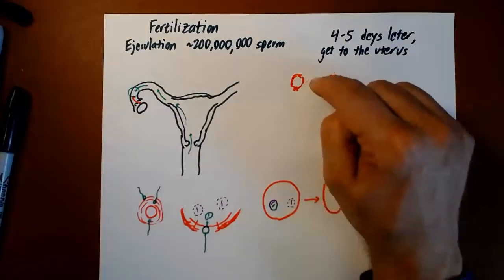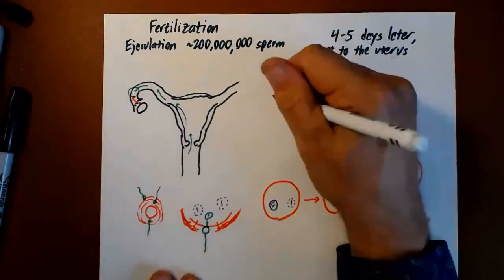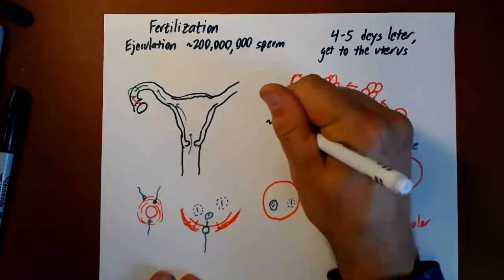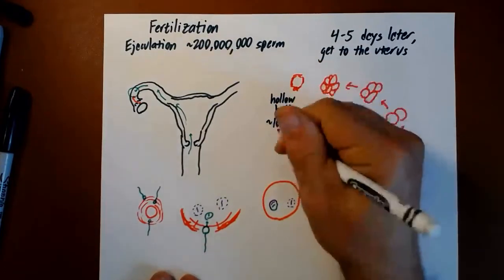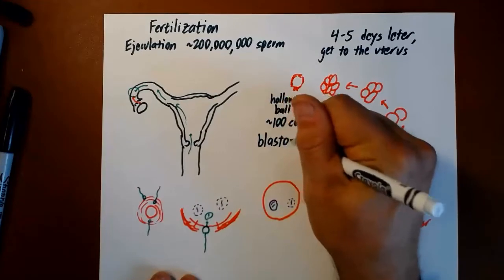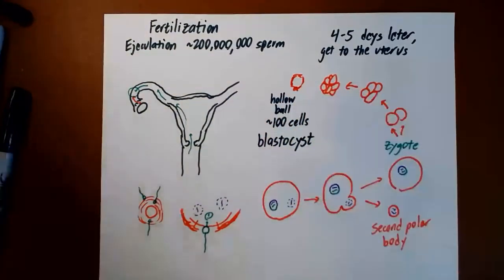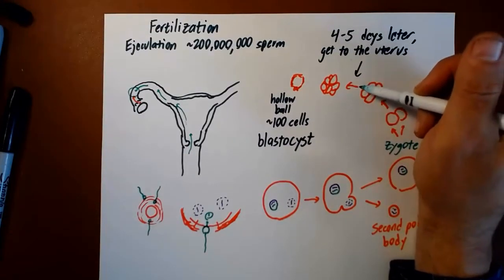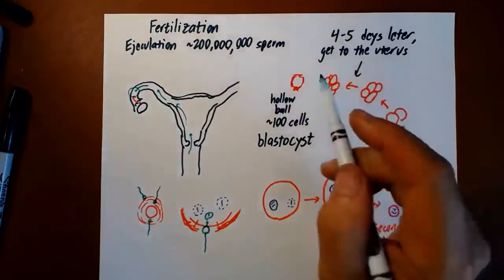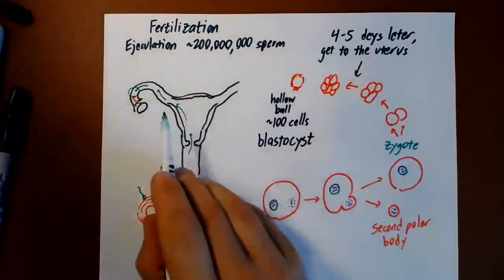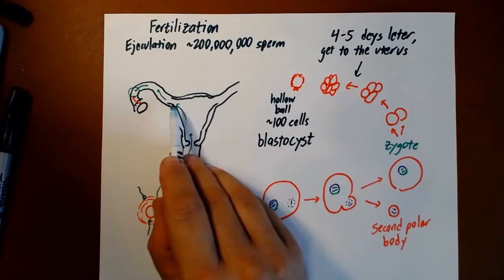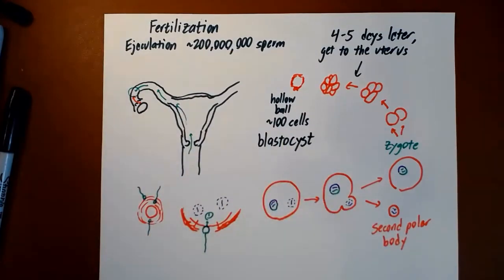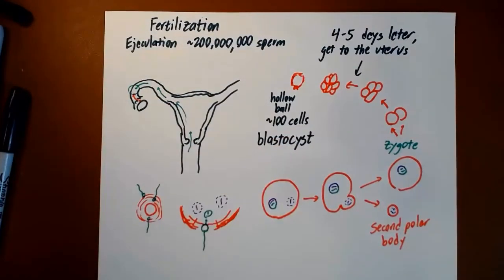Then it's going to keep dividing until it forms a hollow ball of about 100 cells that we call a blastocyst. This is where you are about four or five days after fertilization. You're in the roughly eight cell stage. Over the next couple of days, by getting to about eight days post fertilization, you're going to be at this blastocyst stage. That's where we're going to have to implant in the wall of the uterus.